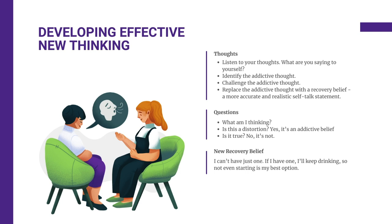Developing new thought patterns in cognitive therapy typically involves a structured process. The first step is becoming aware and identifying distorted or negative thought patterns — recognizing thoughts that contribute to distress or maladaptive behaviors. An example of a distorted thought might be: 'I've been clean for a while now, so I can just handle one drink or one hit without any consequences. I deserve to reward myself, and it won't lead to a full-blown relapse. I've got this under control.' This thought reflects minimization and rationalization, common cognitive distortions in recovery. It underestimates the potential risks and downplays the impact that even a small relapse could have on the recovery process.